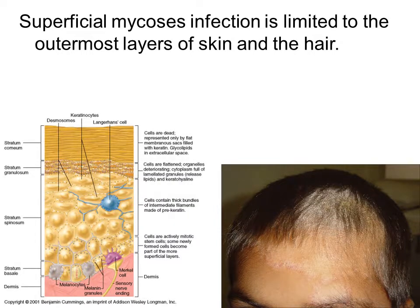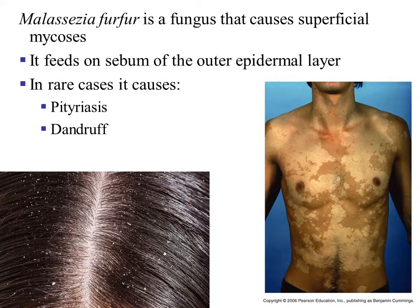Superficial mycosis infections are limited to the outermost layer of the skin and the hair. One example of superficial mycosis is caused by Malassezia furfur. This is a fungus that causes the superficial mycosis. It will feed on sebum of the outer epidermal layer. In rare cases, it can cause pityriasis and dandruff.